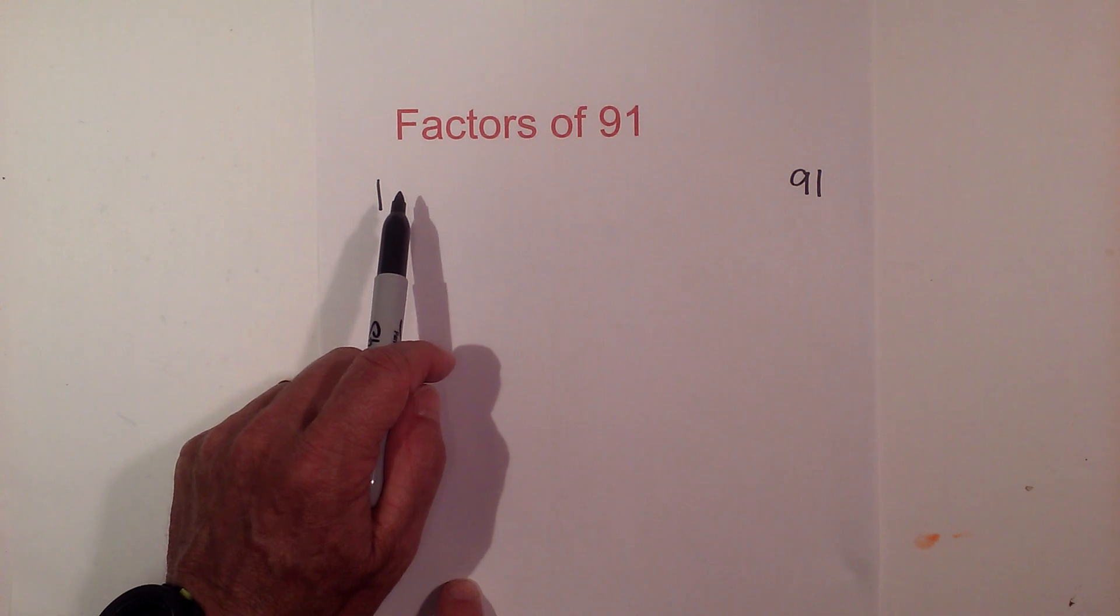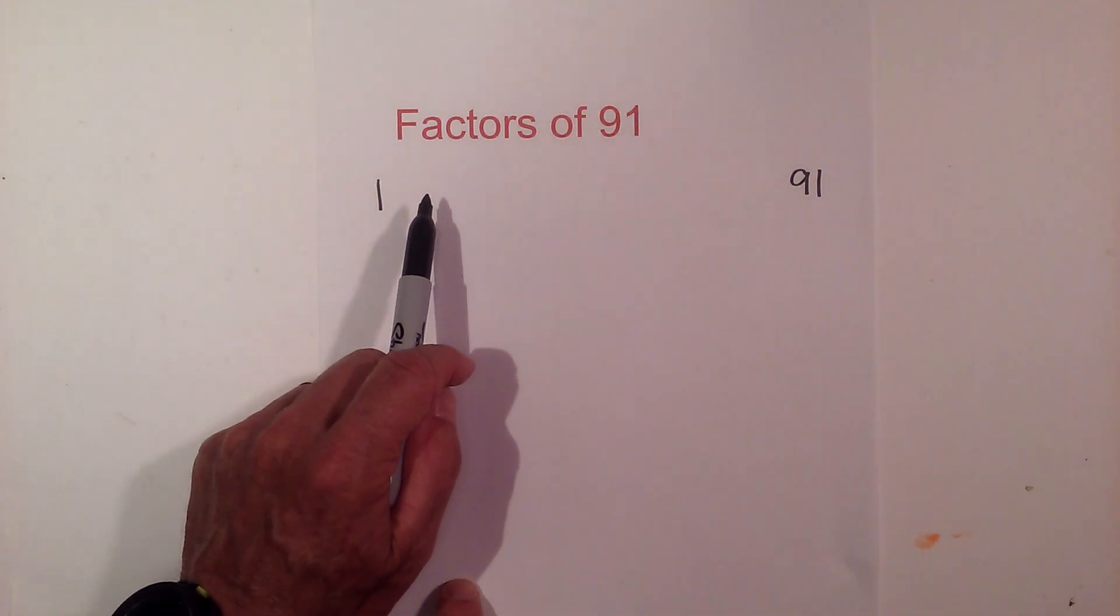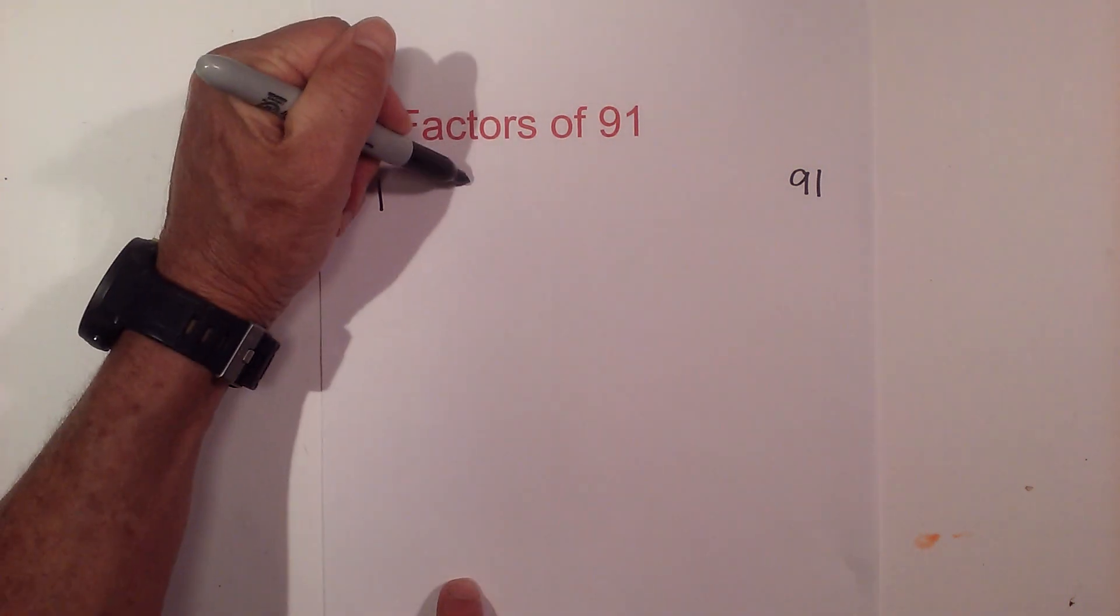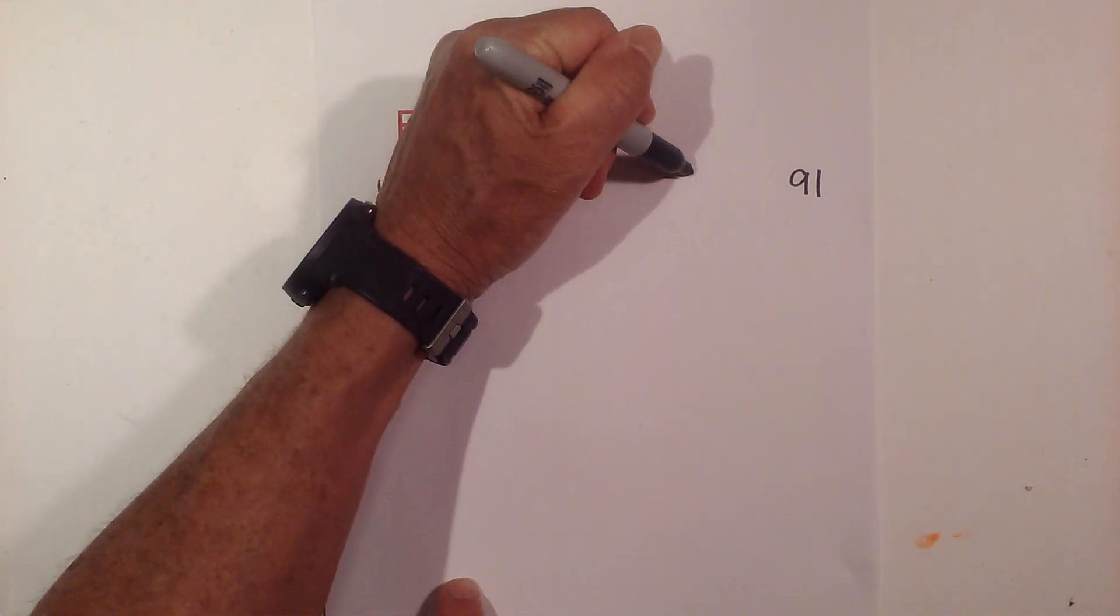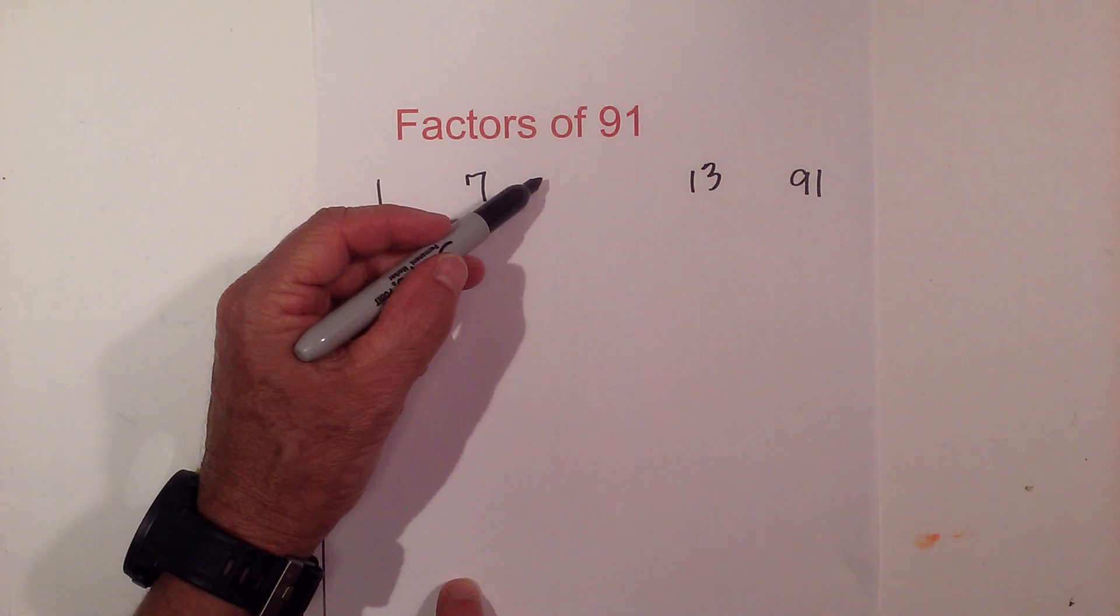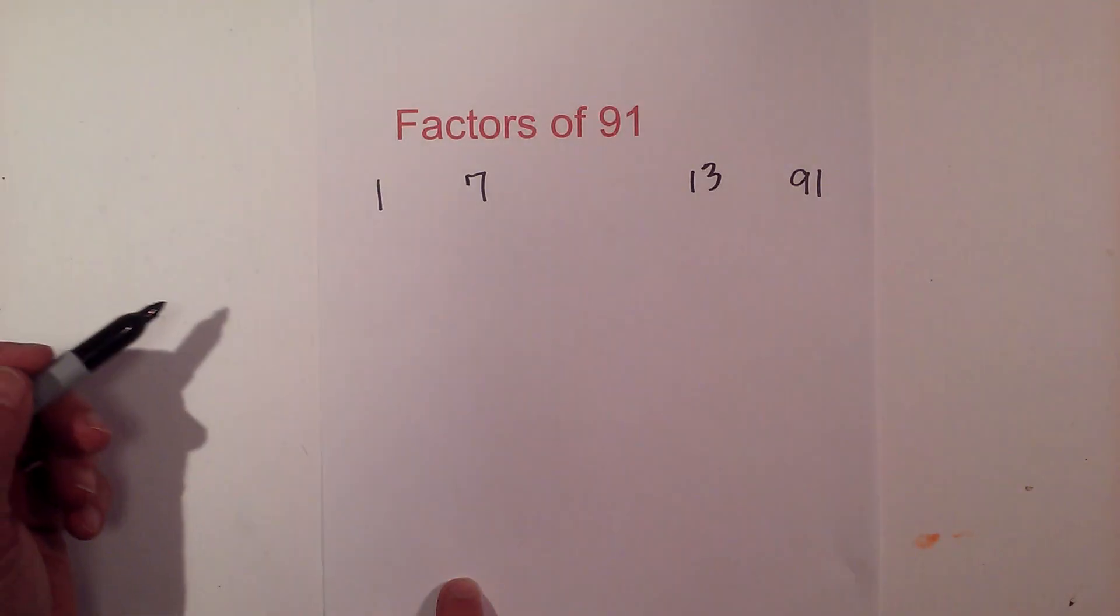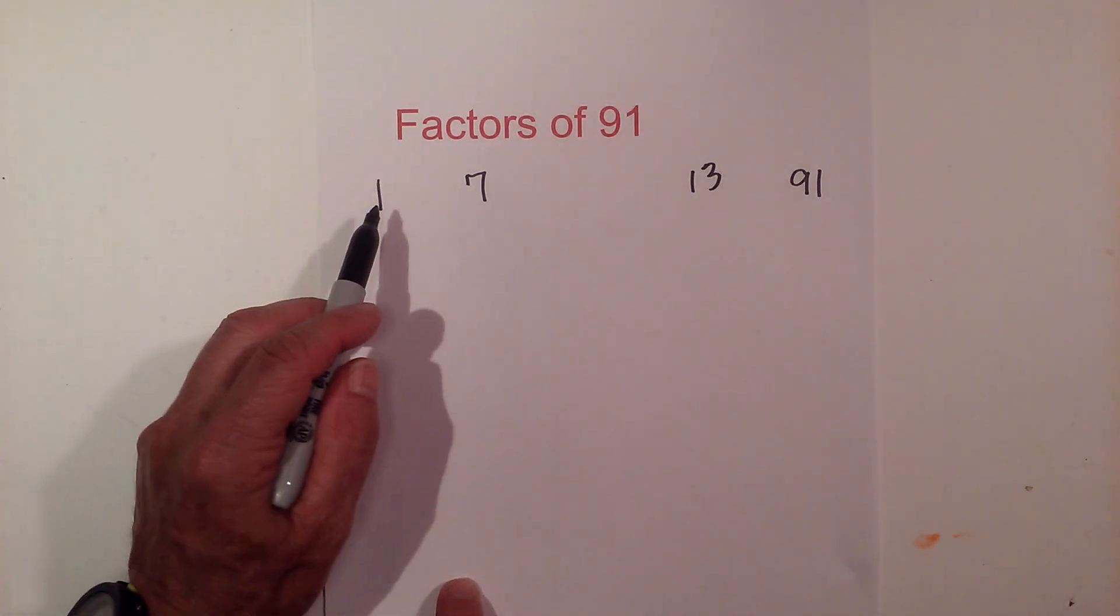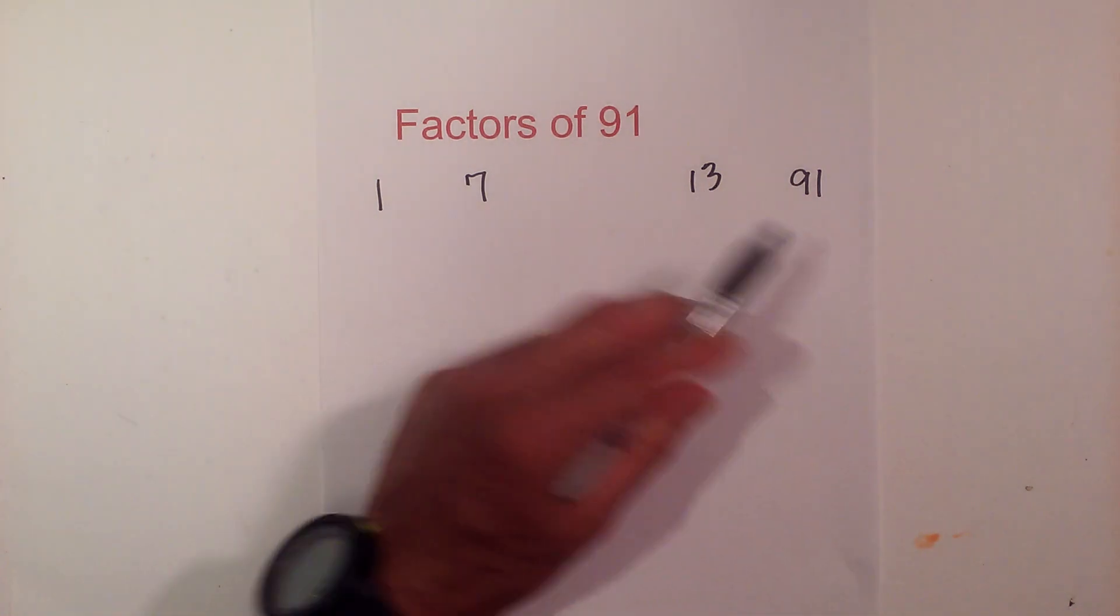2 does not go into 91, nor does 3, 4, 5, 6, but 7 goes into 91 13 times. 8 does not go in, 9, 10, 11, nor does 12. So the factors of 91 are 1, 7, 13, and 91.